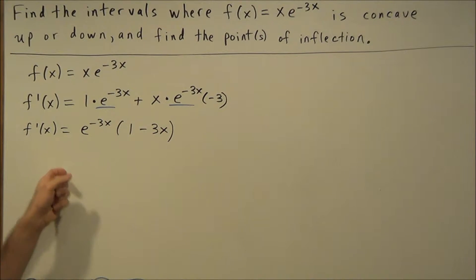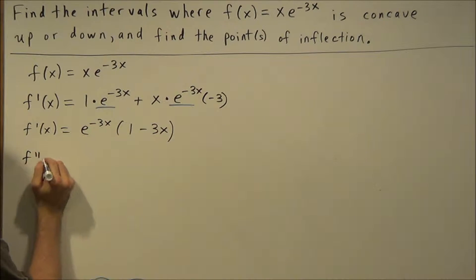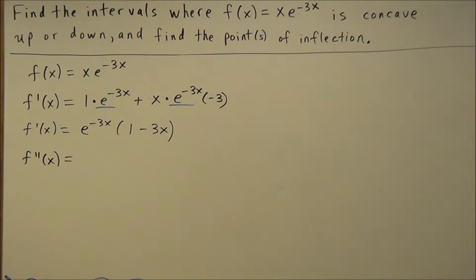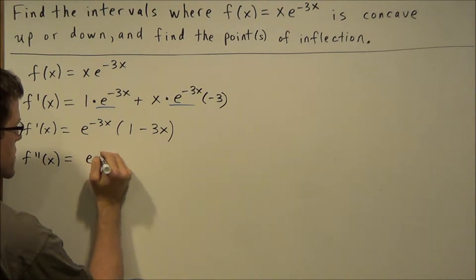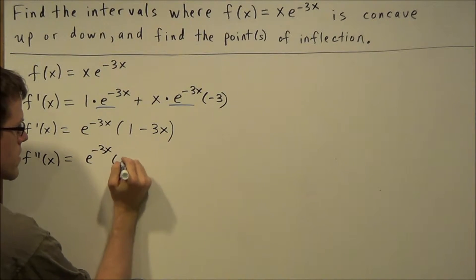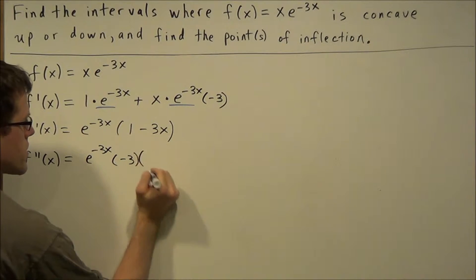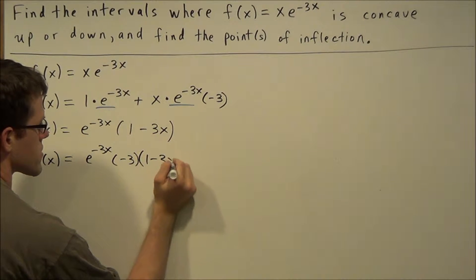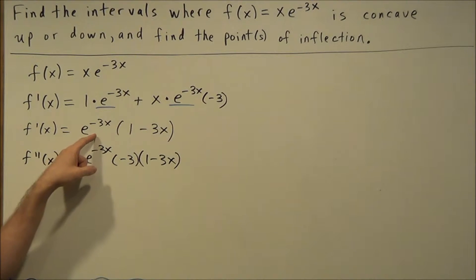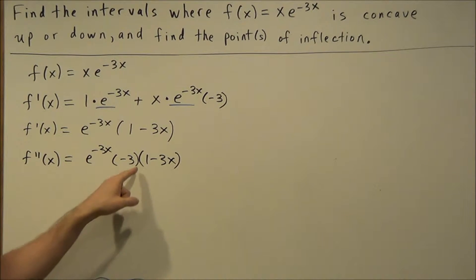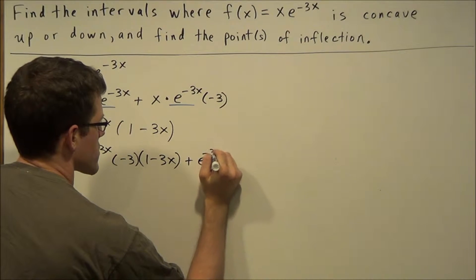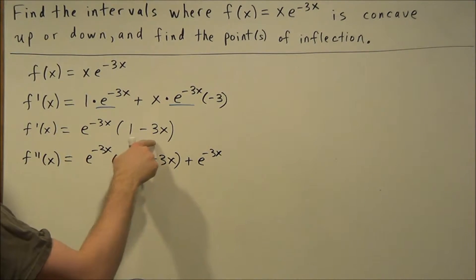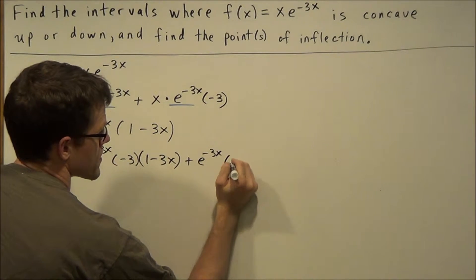From this stage of the problem we need to find the second derivative, so we're going to use product rule again. We have the derivative of e to the negative 3x, which is e to the negative 3x times negative 3, multiplied by 1 minus 3x. So using product rule, we took the derivative of e to the negative 3x times the second function, plus e to the negative 3x times the derivative of 1 minus 3x, which is negative 3.